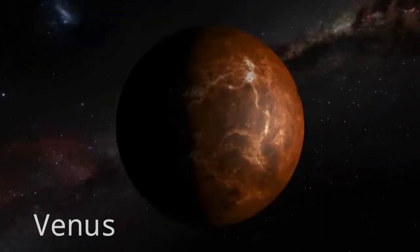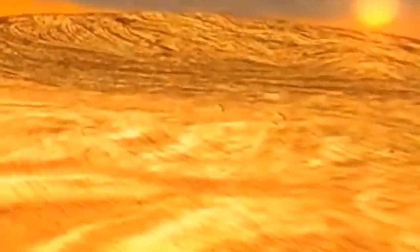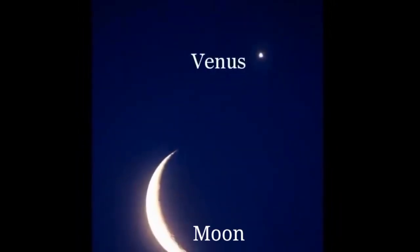Venus, it is the hottest planet in the solar system as its atmosphere has large amount of carbon dioxide, which does not allow heat to go out. It is so beautiful and the second brightest object in the night sky after moon.